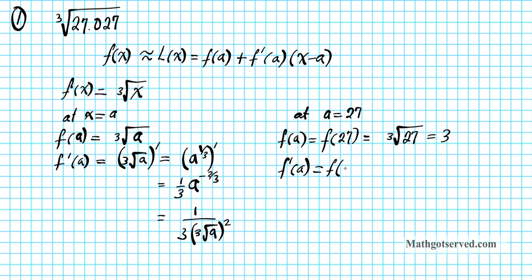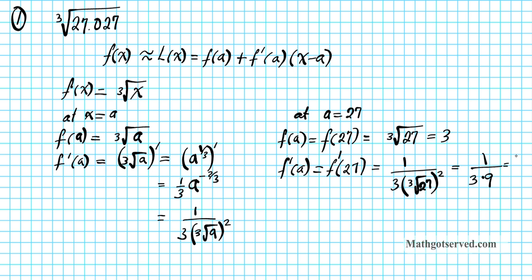f prime of a is the slope of the tangent line. We want to find the slope at a equals 27, so f prime of 27 is what we get when we input 27 into the derivative function. That becomes 1 over 3 times the cube root of 27 raised to the second power. The cube root of 27 is 3, and 3 squared is 9, so f prime of 27, the slope of our tangent line, is 1 over 27.